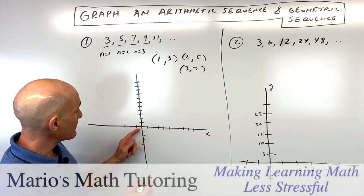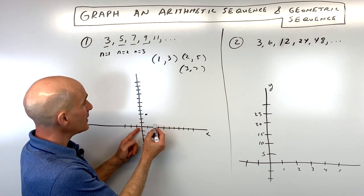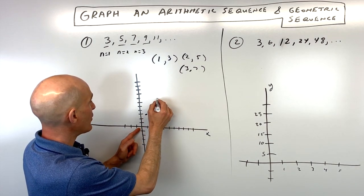Now what we're going to do is we're going to plot them on the graph here. We've got 1, 3, which is right about there, 2, 5, which is right about there, 3, 7, which is right about there.